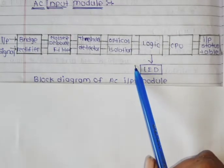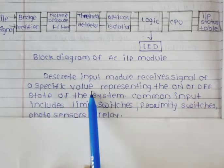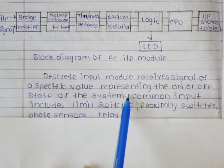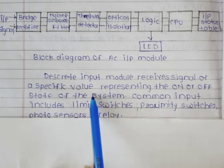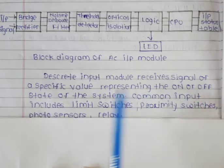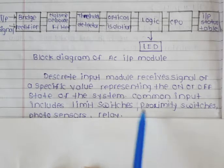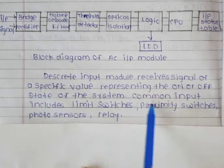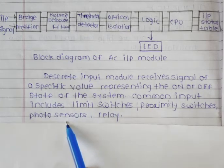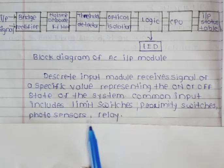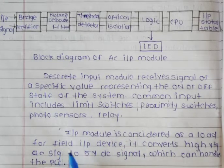Now let's see the working of this AC input module. First, the discrete input module receives a signal of a specific value representing the on or off state of the system. Common inputs include limit switches, proximity switches, and photo sensors. The input module is considered as a load for the field input device.